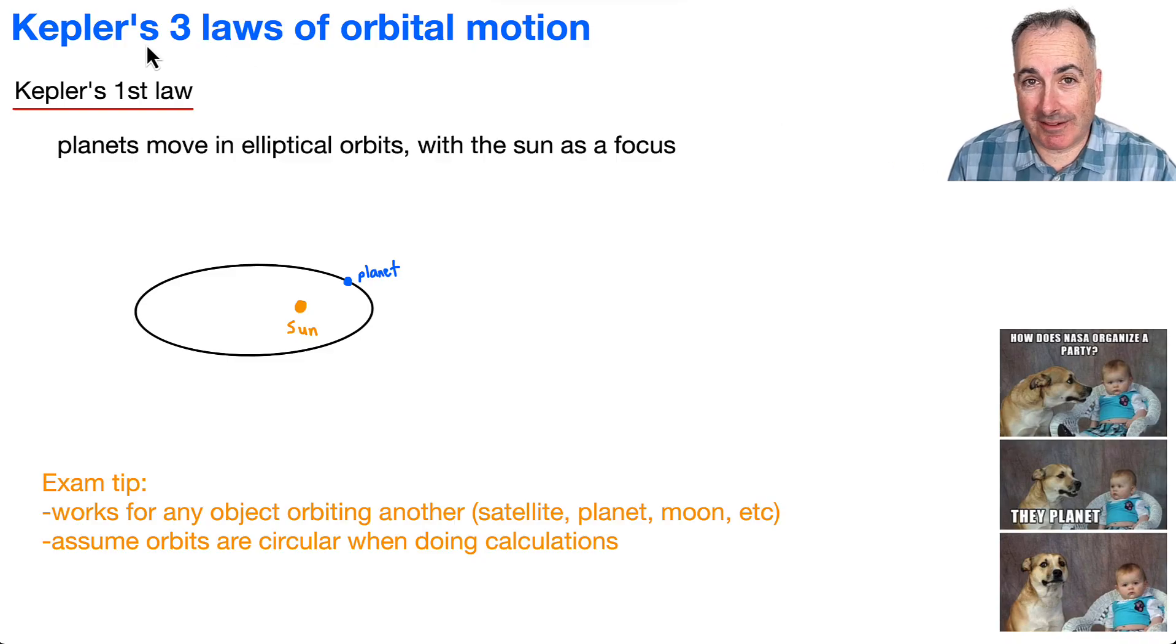We're going to talk about Kepler's three laws of orbital motion. Johannes Kepler figured out a lot of these things. These are empirical, which means they came from just looking at a bunch of data. He was working with a guy, a Danish astronomer named Tycho Brahe.